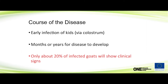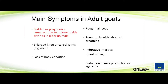I've seen animals with CAE in a special infected herd I was working on years ago. The symptoms in adult goats include sudden or progressive lameness — it's arthritis, synovitis in older animals. Another name for it is 'big knee,' because animals have enlarged carpal joints or other joints. They start losing body condition because they can't walk to the feed trough or water. You'll also see rough hair coat and pneumonia with labored breathing.